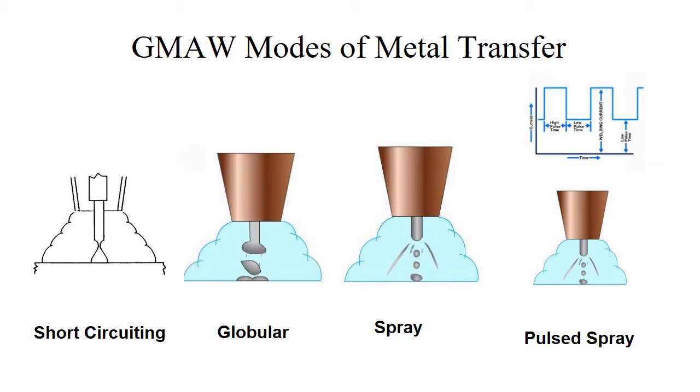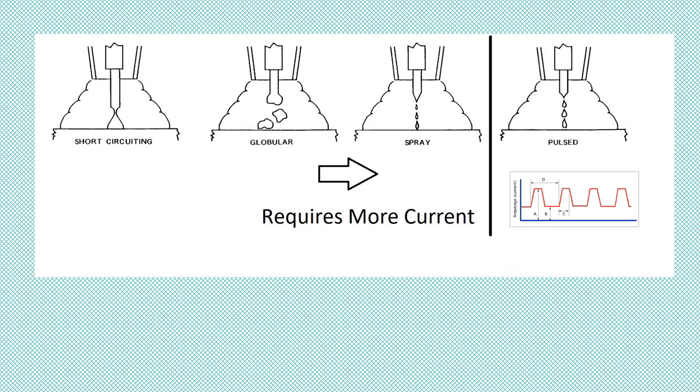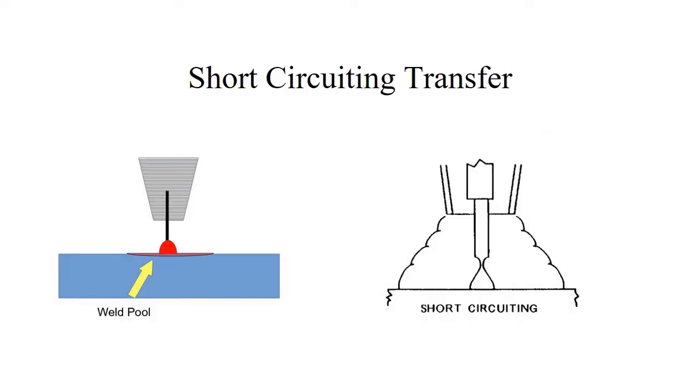You're going to run across this a lot when you start getting into welding codes because some of them are considered one process and short-circuiting is considered its own process. We're going to start on the low end of the transfer modes with short-circuiting and then go up to globular, spray, and pulse spray. The key of this video is to really listen to the sounds and recognize that there's a difference between the four transfer modes. If you're an engineer or an inspector walking the shop floor, you can say, 'Hey, that doesn't sound right. They're supposed to be running pulse and that doesn't sound like pulse.' It gives you an idea of the different sounds that each process kicks off.